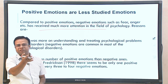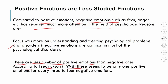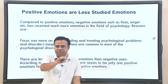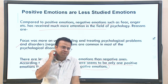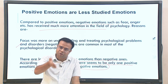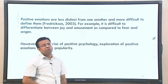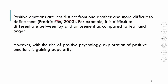According to Fredrickson, there seems to be only one positive emotion for every three or four negative emotions. So as a rule of thumb, for three or four negative emotions there will be one positive emotion. Since positive emotions are much fewer in number, fewer studies is a natural outcome. Another significant reason is that positive emotions are less distinct from one another and are more difficult to define.